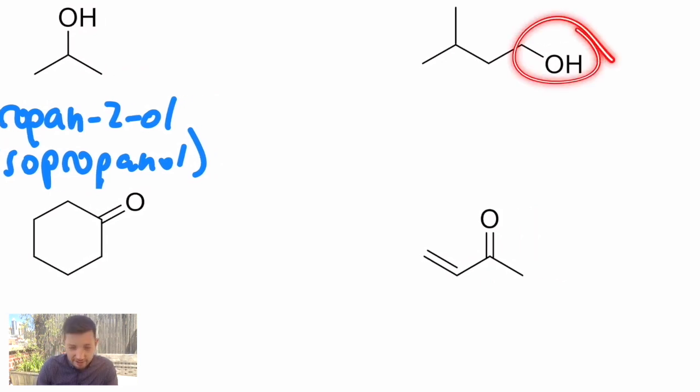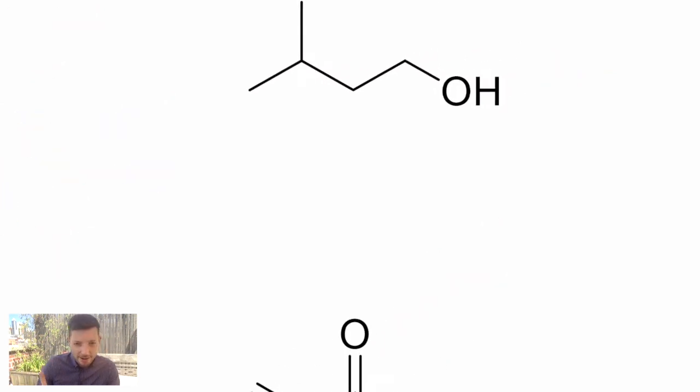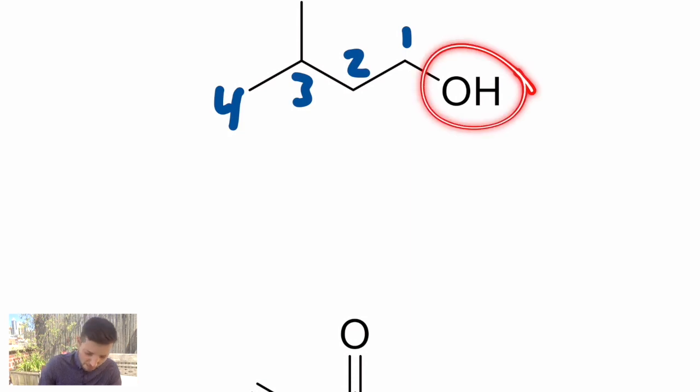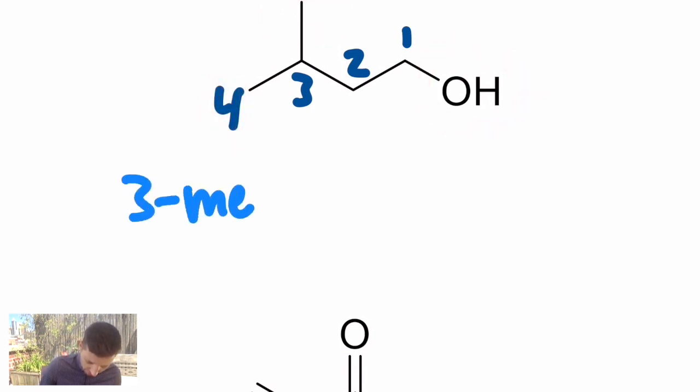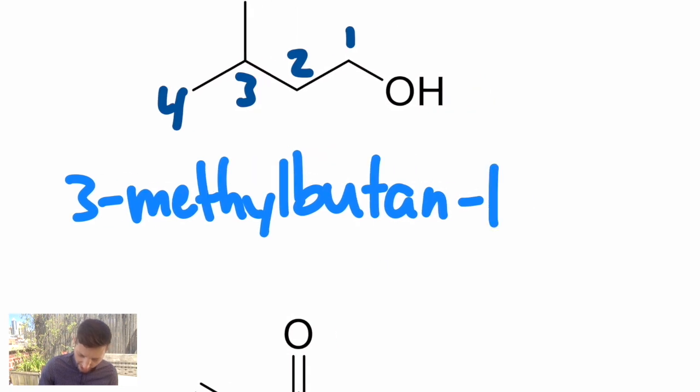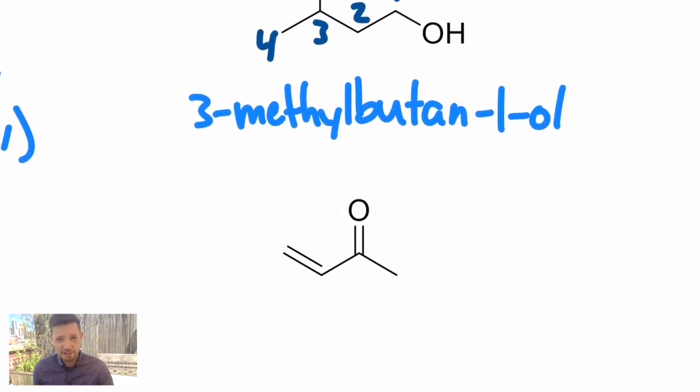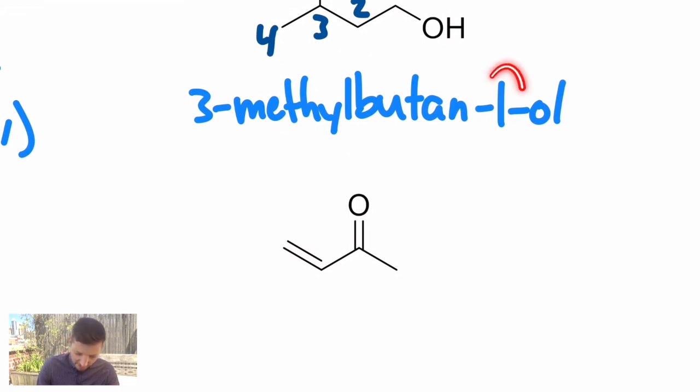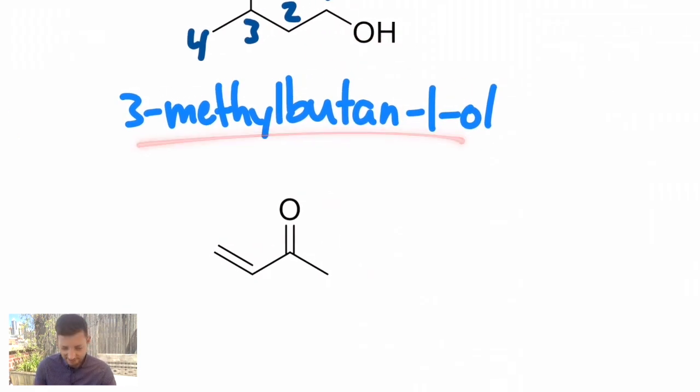Here's our first example of a functional group and a branch on the same carbon chain. If I number my carbon chain, finding the functional group first, it's here. That's number one, two, three, and four. So I have an alcohol on carbon one and a methyl on carbon three, and it is a four-carbon chain. This is 3-methylbutan-1-ol. Here's a good example of why putting the number before the suffix makes a lot of sense. Sometimes you might see the number before the parent chain, but this is the more correct systematic way.